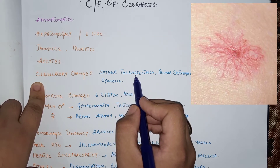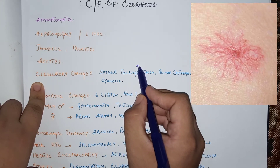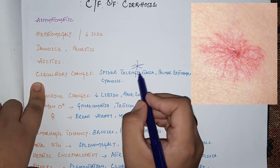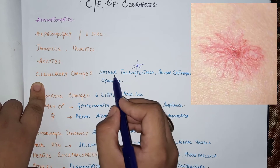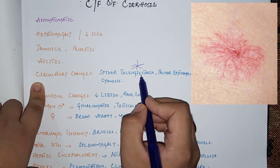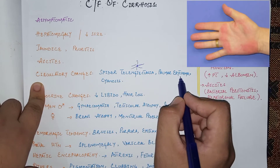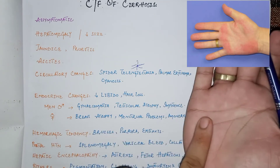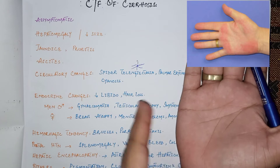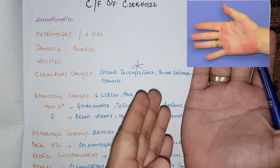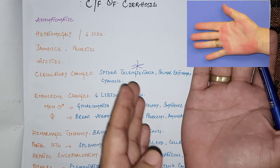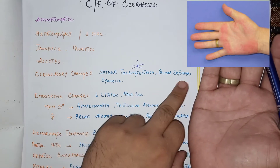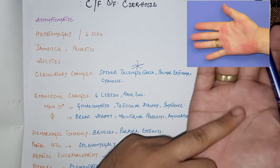Circulatory changes in cirrhosis include spider telangiectasia, where a central arteriole becomes swollen with small capillaries arising from it in a web pattern like a spider. Another feature is palmar erythema, which is redness of the palms. Both occur due to hyperestrogenemia: because estrogen is metabolized in the liver, impaired liver function causes high estrogen levels, leading to vasodilation.